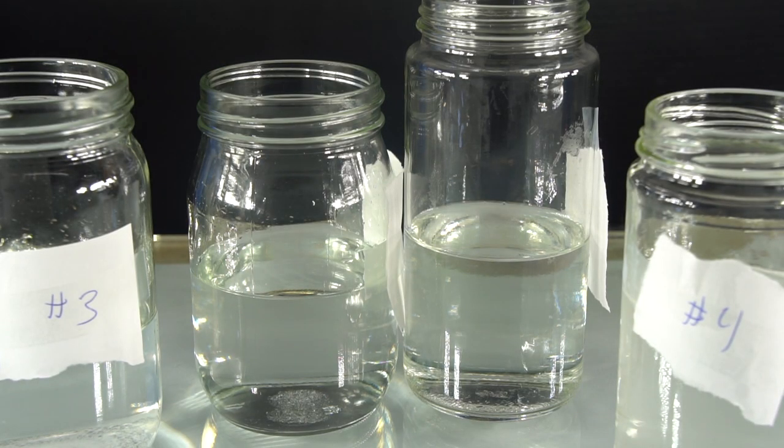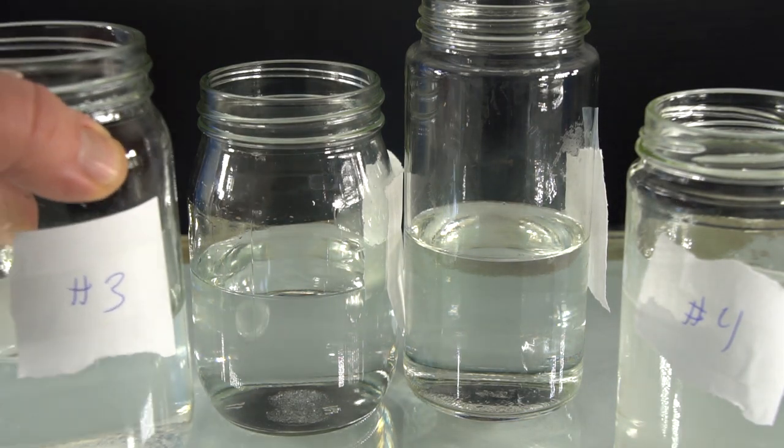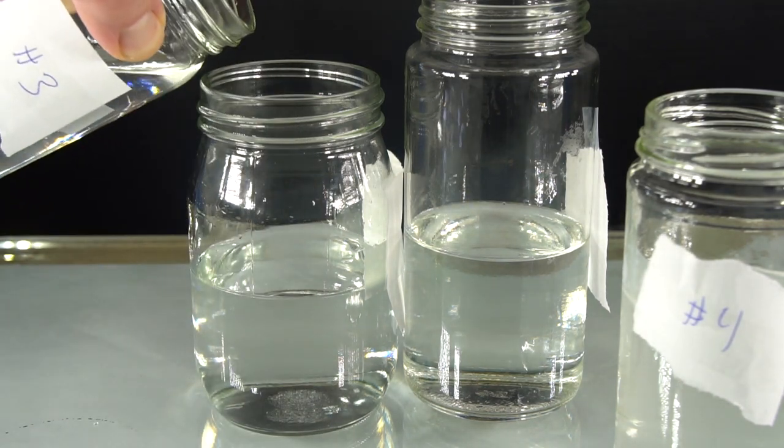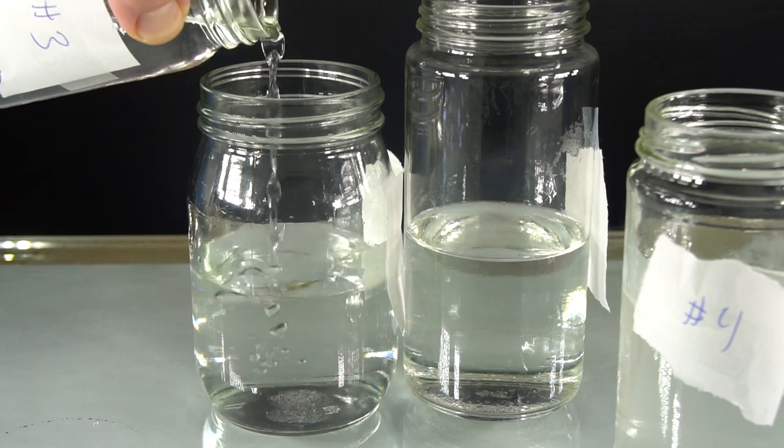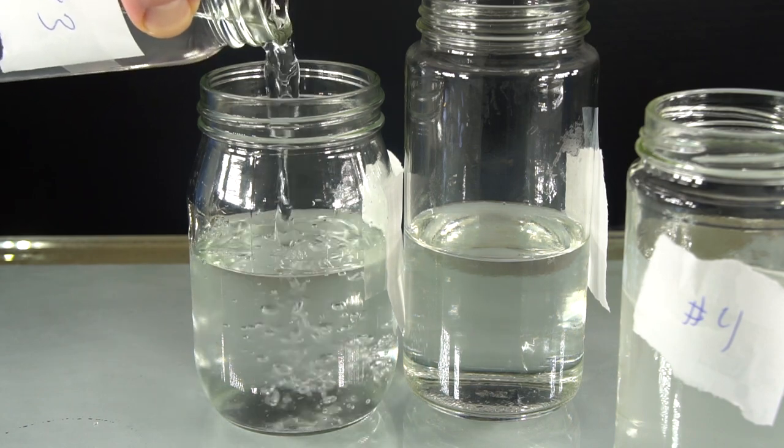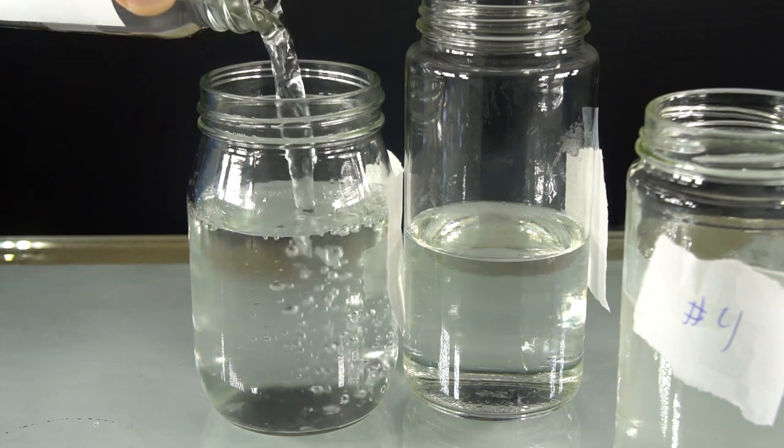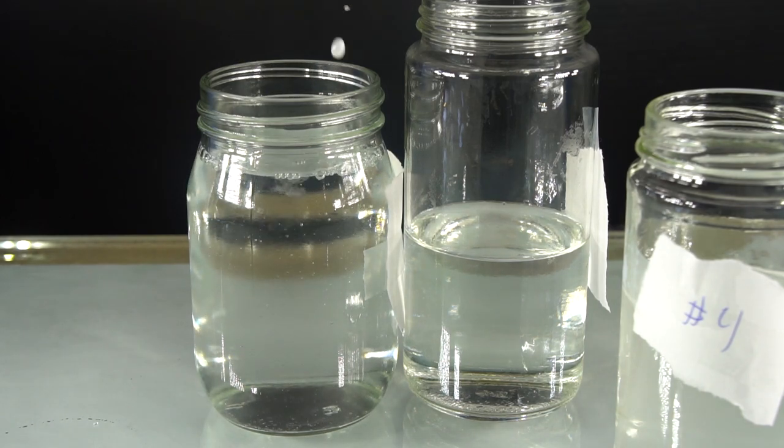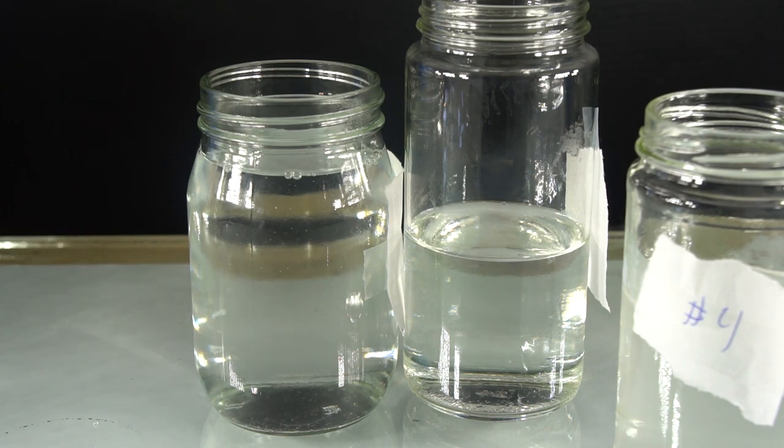Now you are ready for the main reactions. Pour the jars of sodium bicarbonate and sodium carbonate, jars three and four, into the jars of magnesium sulfate, jars one and two. Pour jar three into jar one, and pour jar four into jar two. Many new compounds are about to be formed here.